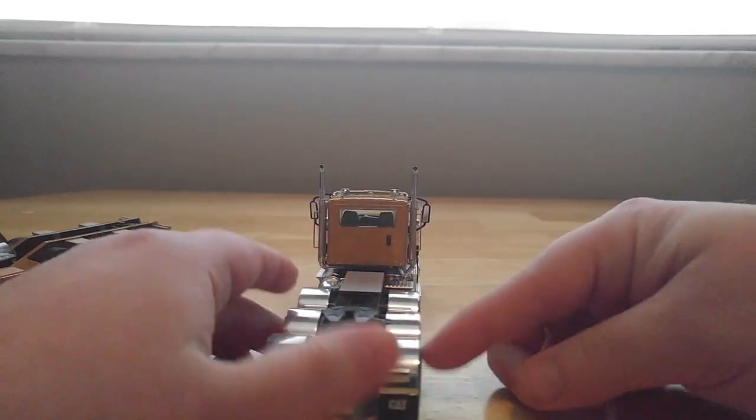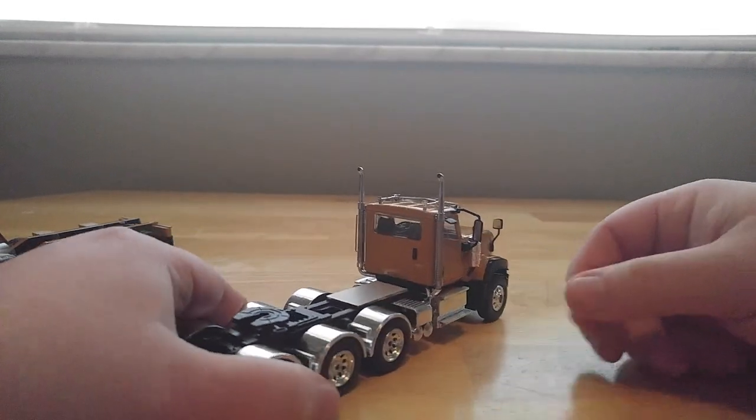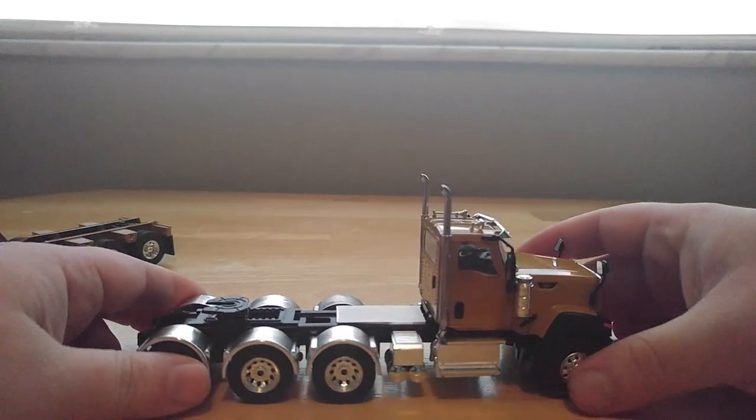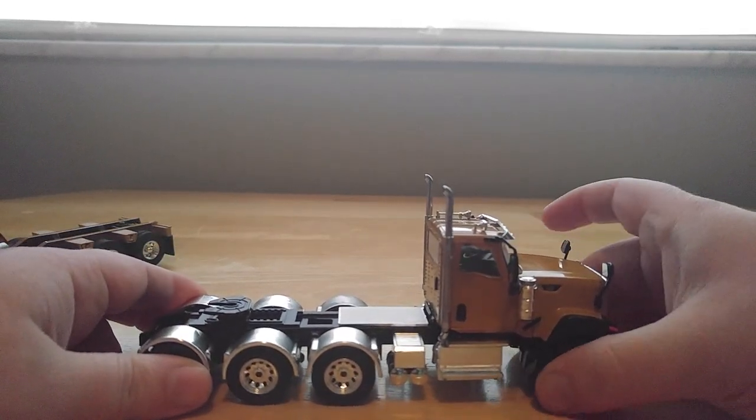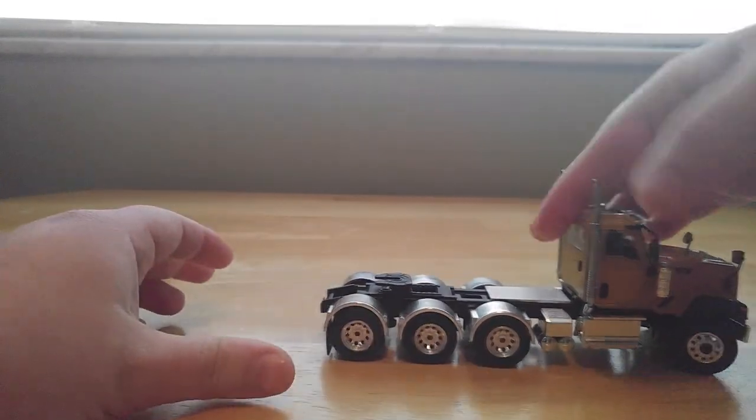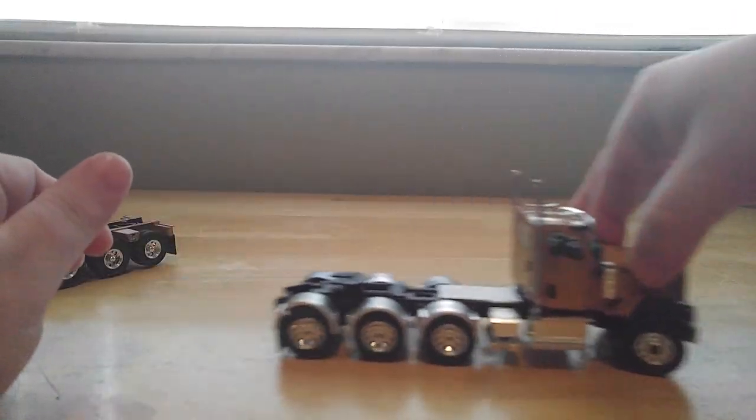There you have some mud flaps, lights, and some chrome fenders over the wheels. There is a decent range of steering, and if you lock it into place, it will trace somewhat.